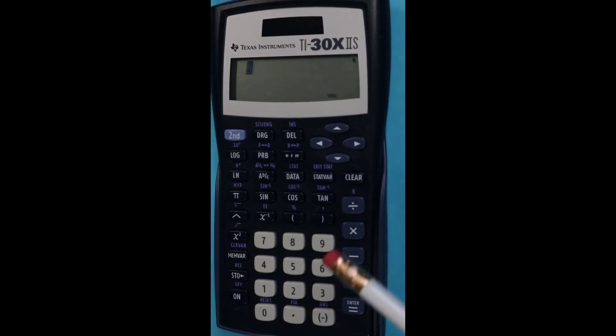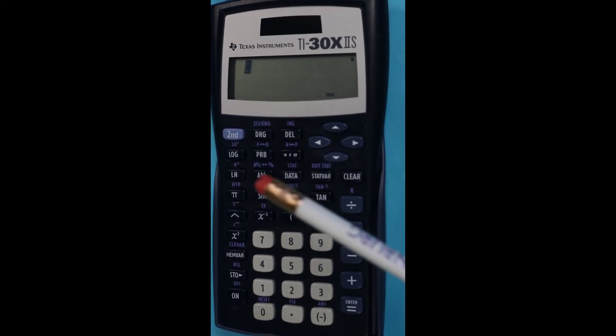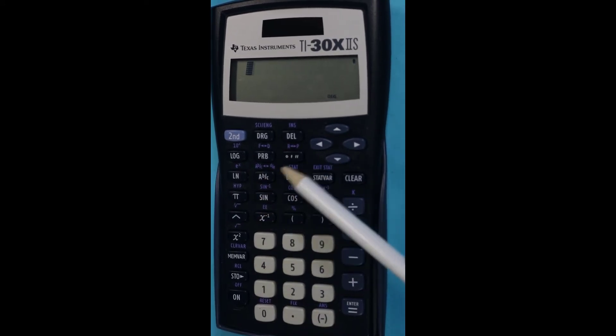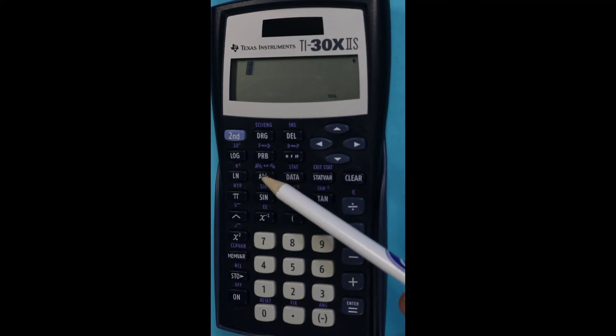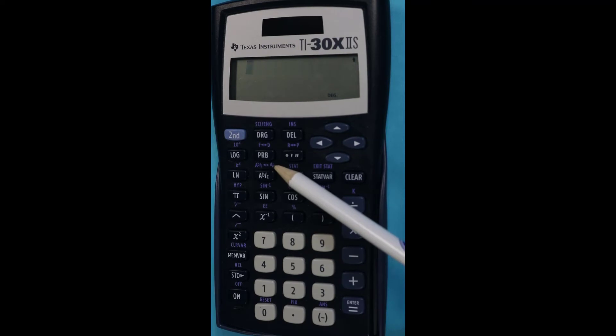Alright, so now we're looking at the surface of the calculator and I wanted to point out the keys. They may be in different positions on your device, but here's the AB slash C key. This is the mixed number form.